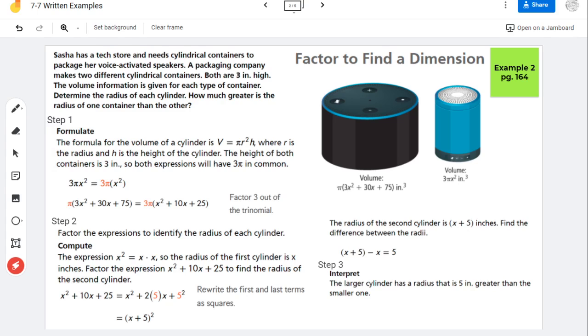But on the larger container, it has a number pattern. It has this trinomial. So what they're doing is they're using the fact that this is a perfect square trinomial in order to write it as x plus 5 squared.